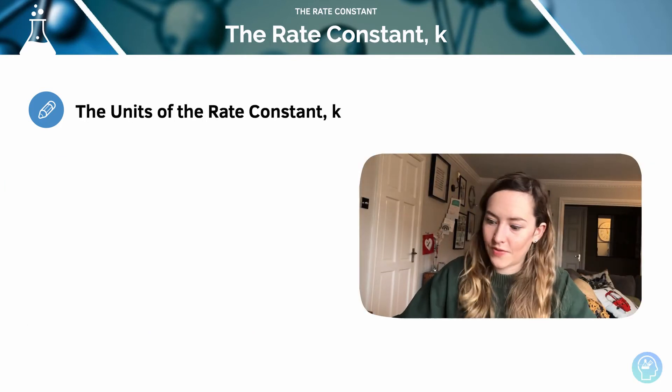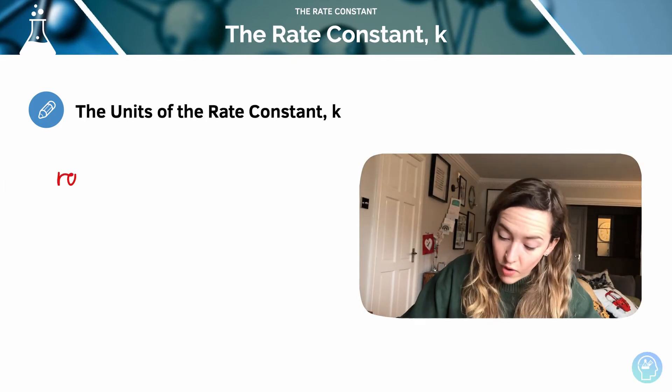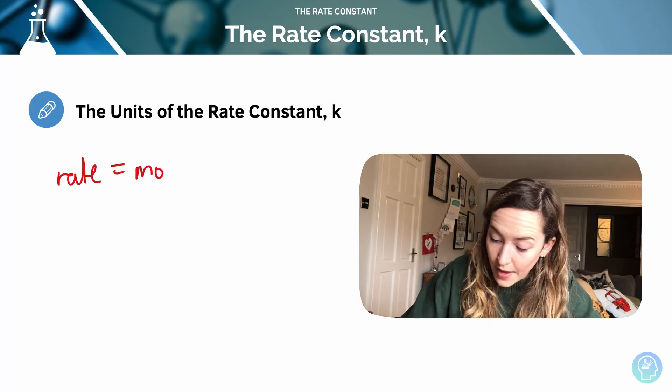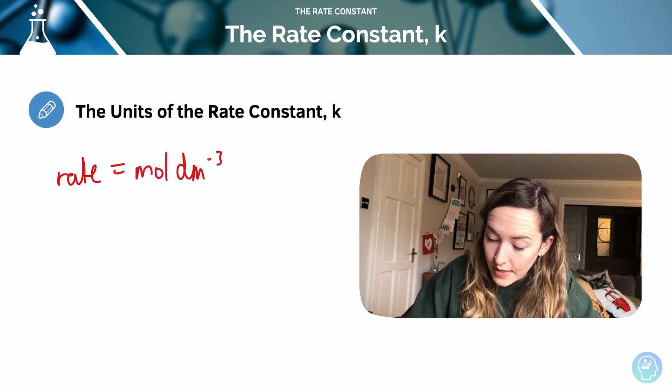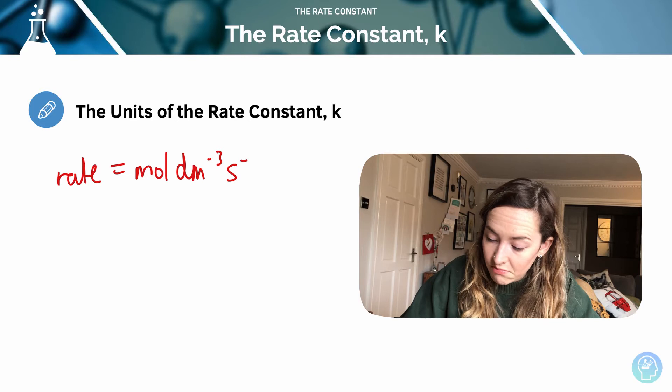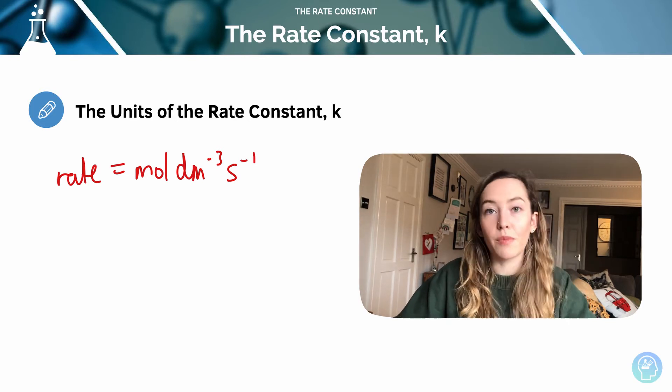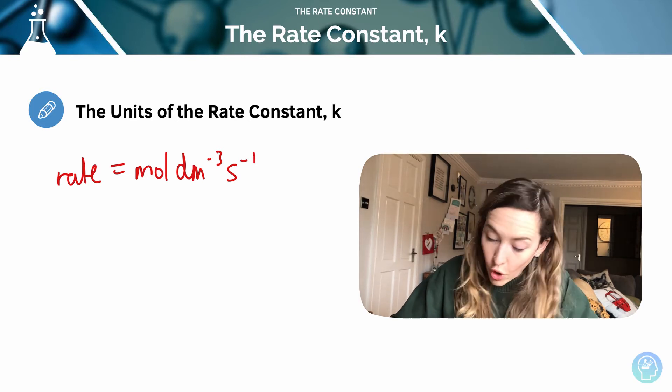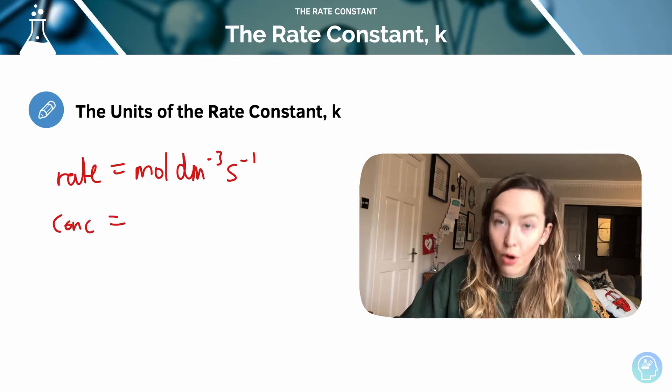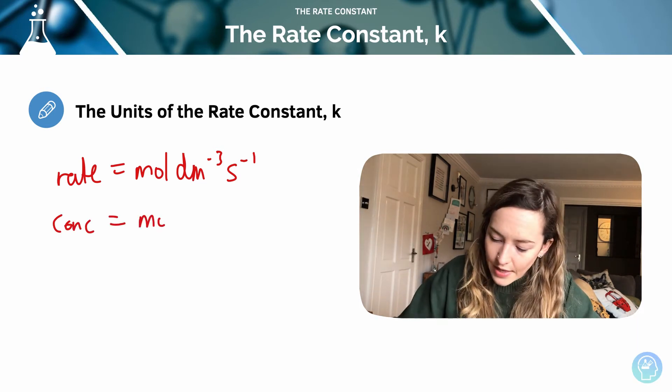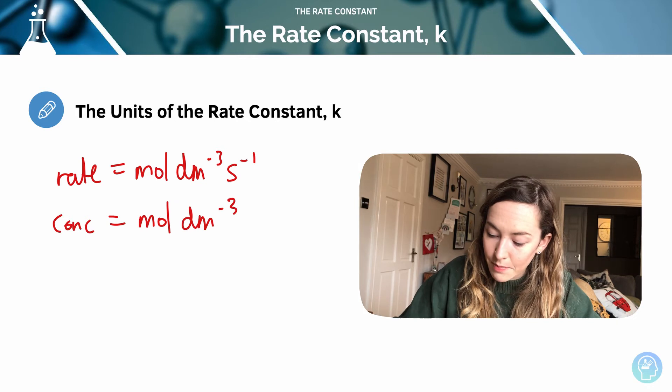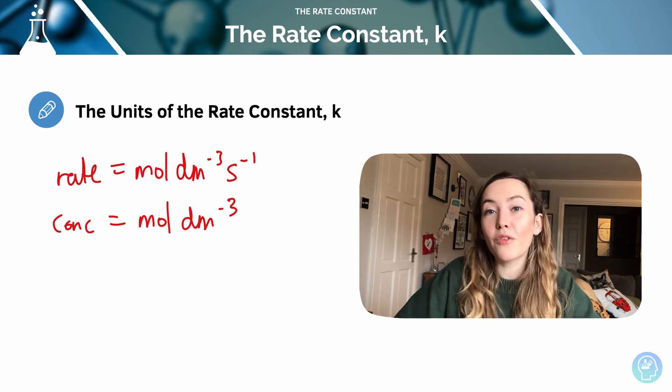We can also calculate the units for k. So the units for rate we know are going to be moles per decimetre cubed per time unit, so seconds for example. We also know that the concentration in general, so concentration of A or B with those square brackets, is going to be moles per decimetre cubed.